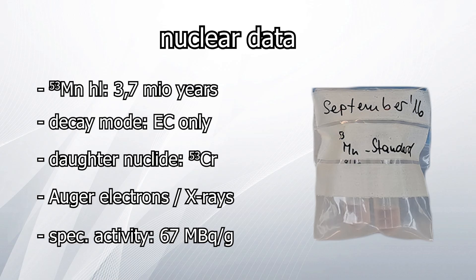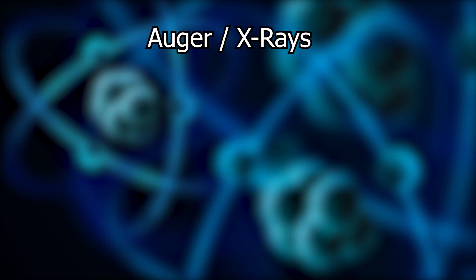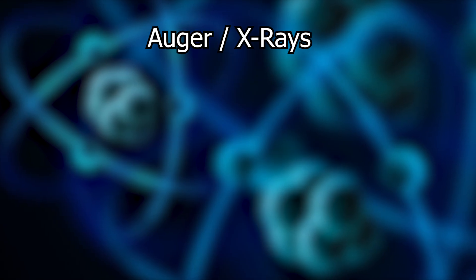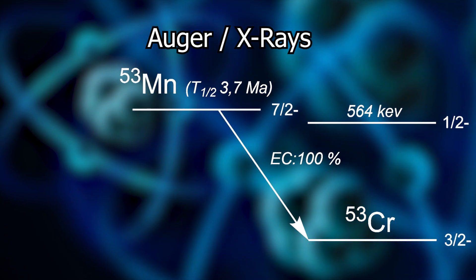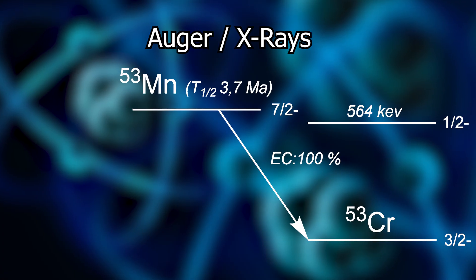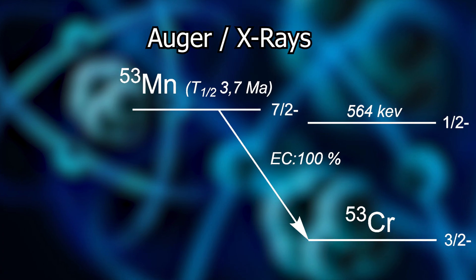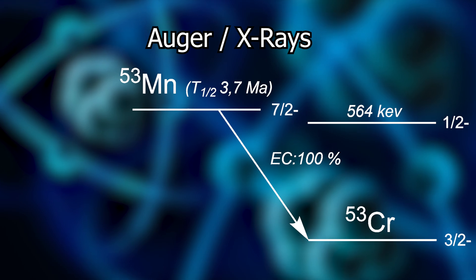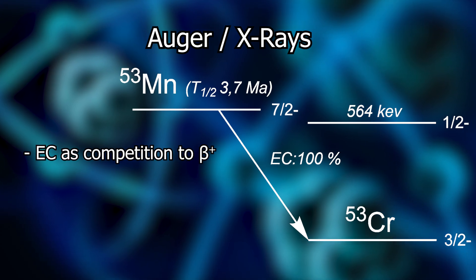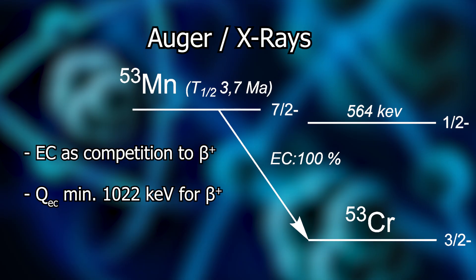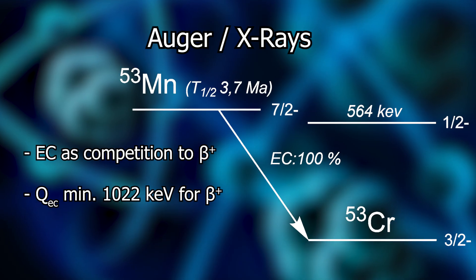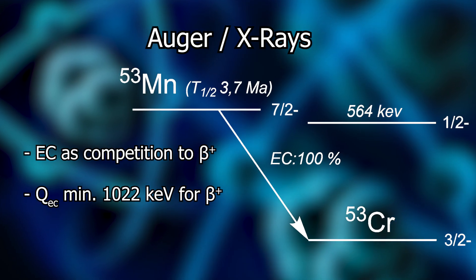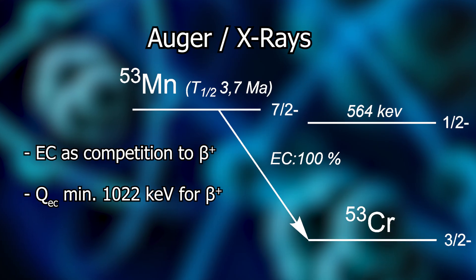It has a specific activity of 67 megabecquerels per gram. Auger electrons, x-rays, and gamma radiation are the only types of ionizing radiation a radionuclide can emit if there is not enough energy available for a proton-rich nuclide to do beta plus decay. The cutoff is at least 1022 kiloelectron volts of energy difference between the parent and daughter nucleus. The Q value for this decay — i.e., the maximum available energy — is just 597 kiloelectron volts.